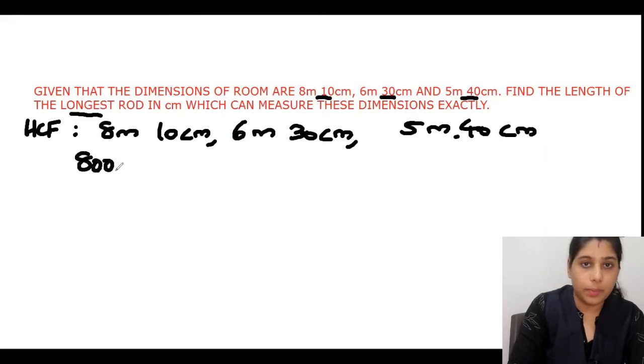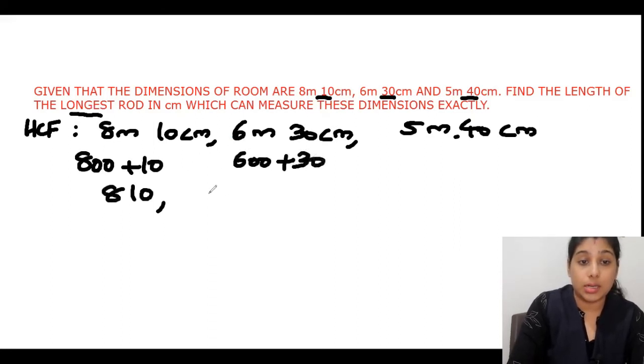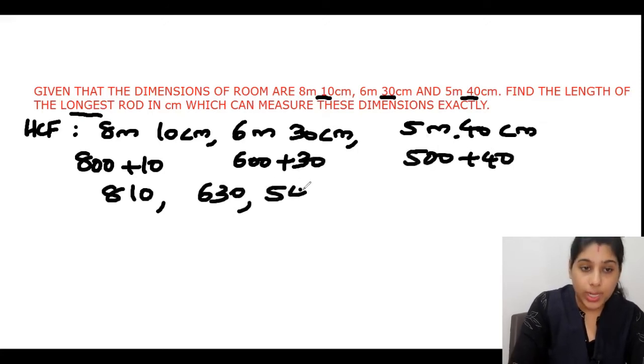So this is 800 plus 10, that is 810 centimeters. This will become 600 plus 30, that is 630. Next, same way, 500 plus 40, that is 540. So we have to find the HCF of these three: 810, 630, and 540.